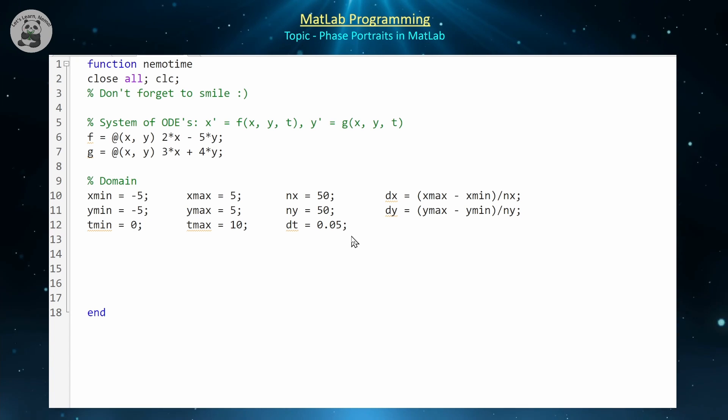Once I have my domain specified, now we need to construct our mesh grid. So [x,y] is going to be equal to meshgrid, and then our x domain is xmin by dx to xmax, and then ymin by dy to ymax. That gives us our mesh grid for our domain, and then we're going to be plotting our phase portrait gradient field. The easiest way we can do that is with the quiver command, so we're going to do quiver(x, y, f(x,y), g(x,y)) for our y component.